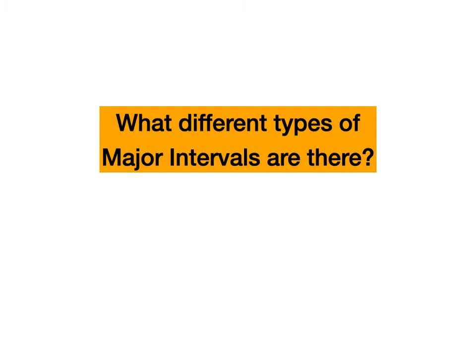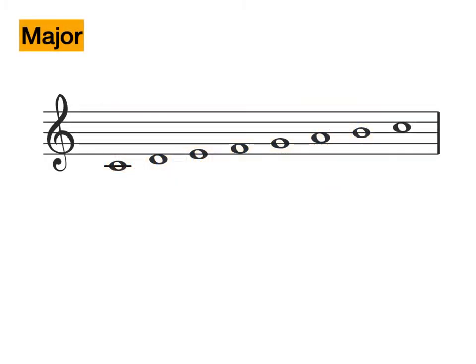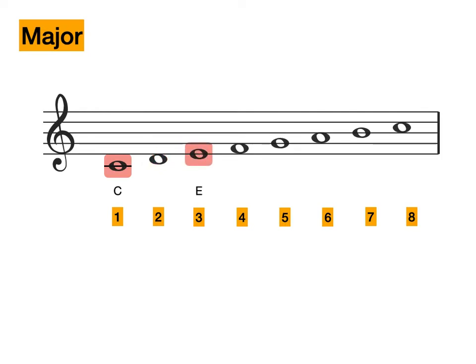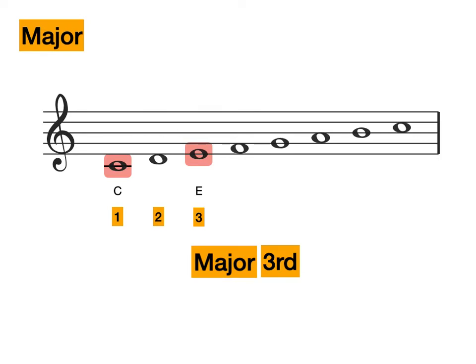So what different types of major interval do we have? Here is our C major scale. Let's put the degrees on the bottom. As you can see, we have highlighted C and D. This is the interval of a second. To be precise, this is a major second. This is because D natural is in the scale of C major. Now we have highlighted E. The distance between C and E is a third, and because E natural is in C major, this is a major third.